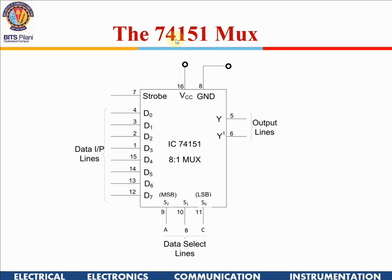We are going to use the 74151, which has active high output. We give VCC and ground, and there are three data select lines A, B, C. If it is 0-0-0, D0 gets connected to Y, and the complement of Y is available at another pin. If you give 0-0-1, D1 gets connected. For the eight different input combinations, one of the input lines gets connected to Y and its complement is available.